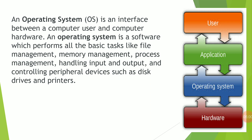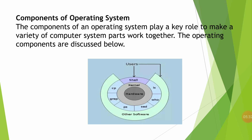We have so many operating systems available — Windows, Mac, Linux, Unix — but the most popular one we are using right now for computer systems is Windows. The operating system has two major components: first is the shell, and second is the kernel. The shell handles the interaction with the user, and the kernel handles the interaction with hardware. These two components are the internal parts of the operating system.